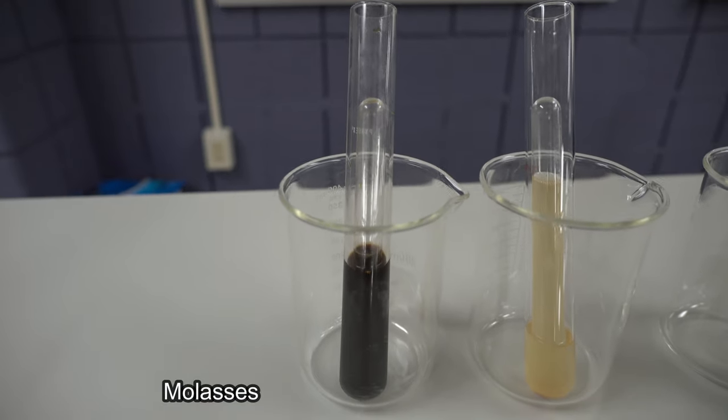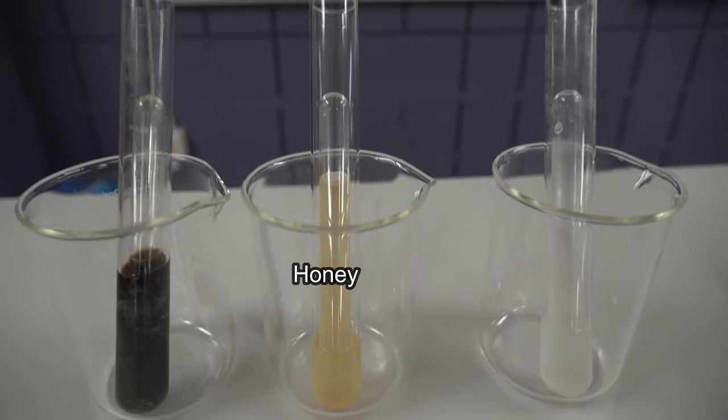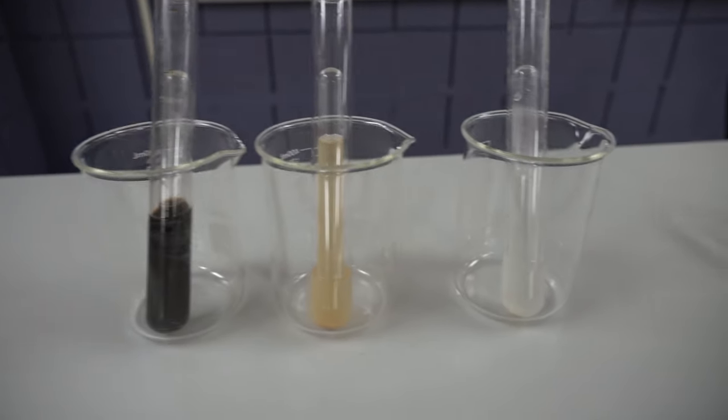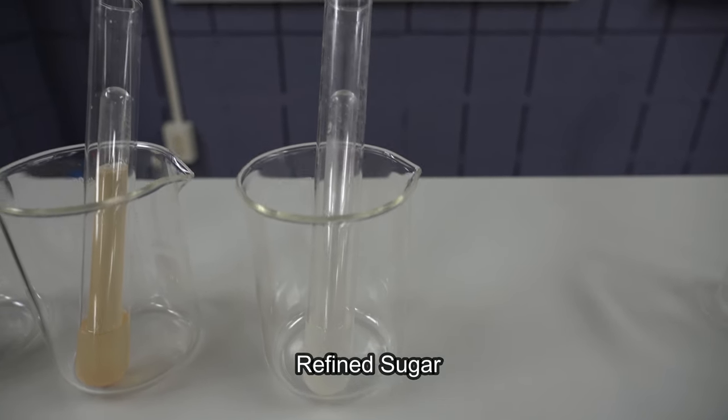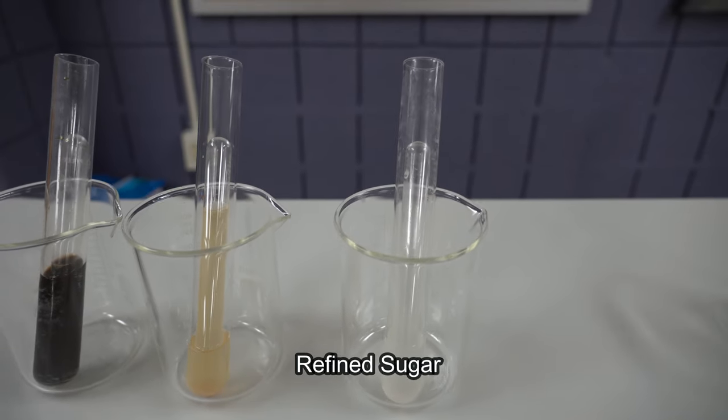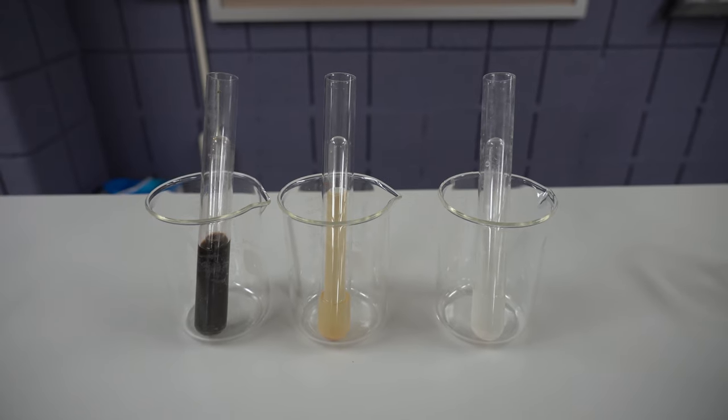And here we can clearly see those differences. This is, again, the molasses producing the most. In comparison, the honey here has the least amount, and the refined sugar is clear, liquid solution is a little harder to see, but that had the second most. So again, we're looking here, we're directly correlating carbon dioxide production to the yeast population.